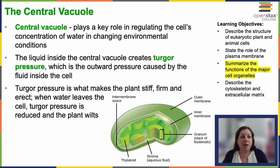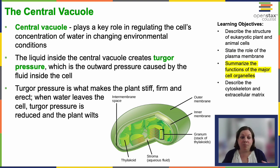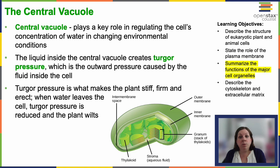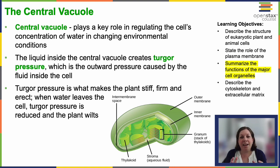The central vacuole plays a key role in regulating the cell's concentration of water in changing environmental conditions. Plant cells need to maintain a particular shape, and the cell wall dictates that shape. If the cell has too much water it could burst; if there's too little water it'll shrivel up. The central vacuole helps keep a store of water to maintain the appropriate water concentration so the cell can maintain its shape.